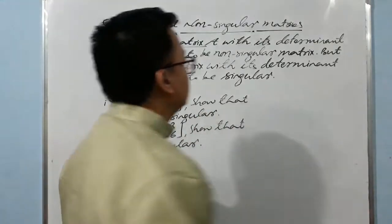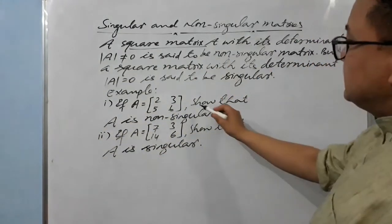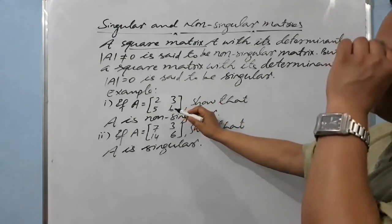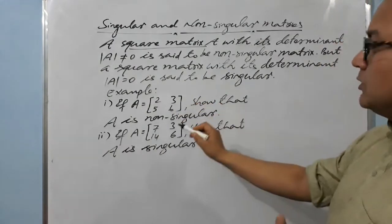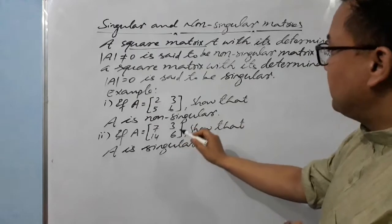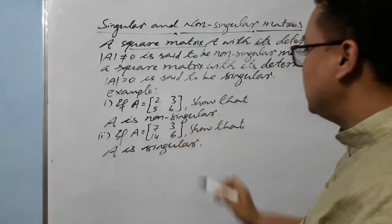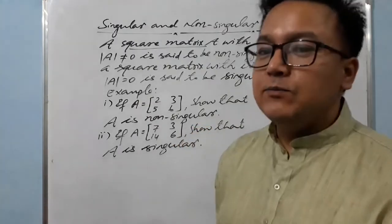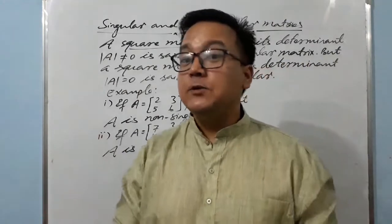So it is very simple: if you find the determinant of a square matrix and it comes to zero, then it is a singular matrix. If the determinant is not equal to zero, then it is a non-singular matrix. Here we have examples — if A equals this matrix, show that it is non-singular; and if A equals this one, show that it is singular. We just have to find the determinant.